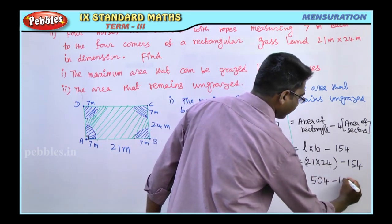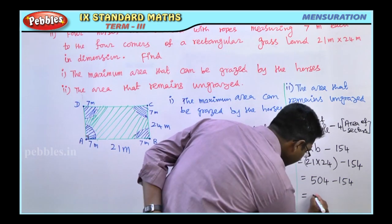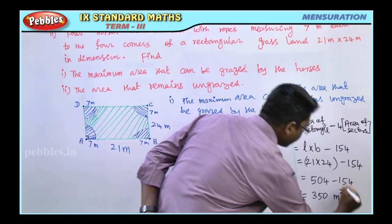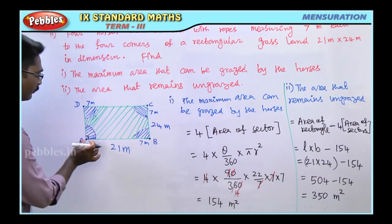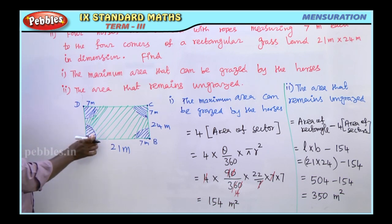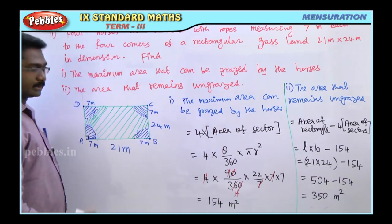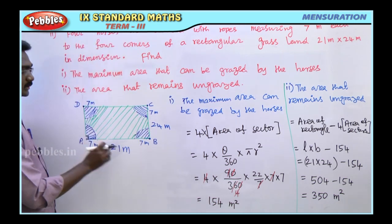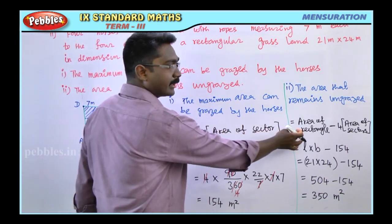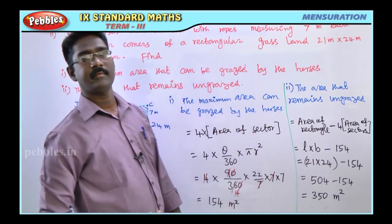So the ungrazed area is 504 minus 154 = 350 square meters. The total area of the rectangle minus the four sectors gives 350 square meters. So the area that remains ungrazed is 350 square meters.